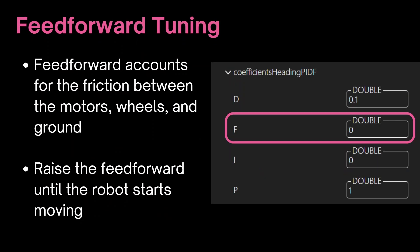To tune the feedforward term, also known as F, the feedforward accounts for the friction between the motors, wheels, and ground, and does so by setting a minimum power output to the motors. To tune the feedforward, we can set all the other values to zero and slowly increase the feedforward bit by bit until the robot starts to move. Then we can decrease it a little bit from there.